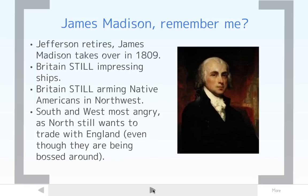Britain is still impressing American trade ships. Even after multiple treaties, like the Jay Treaty and the Treaty of Paris, Britain is still ignoring those treaties and arming Native Americans in the Northwest Territory. Settlers in the West are being attacked by Native Americans given guns by England. This makes people in the South and West extremely angry. The North, even though they probably should be mad since they do the trading, still depends on England enough for their money that they're willing to tolerate England being a bully.